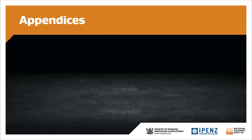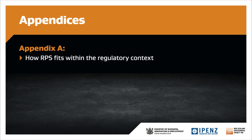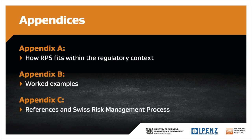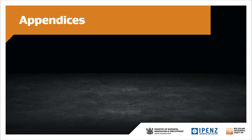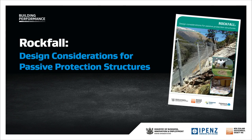The guidance is completed by a detailed set of appendices referenced in the main body. Appendix A provides commentary on how the design of passive RPS fits within the regulatory context. Appendix B includes worked examples of the design of a flexible RPS and an earthbund, and demonstrates how the guidance can be applied. Appendix C references the Swiss rockfall risk management process, which is one example of how a risk management process could be applied. This concludes the presentation of the guideline Rockfall Design Considerations for Passive Protection Structures.